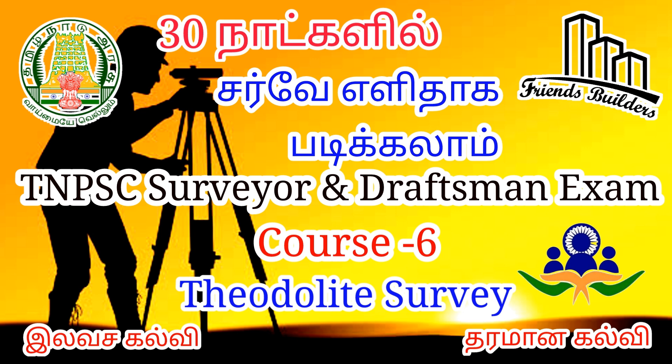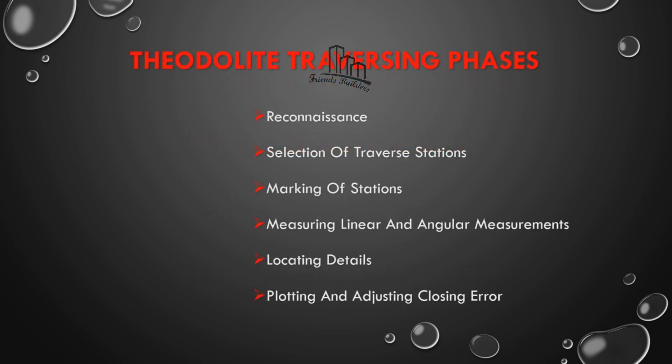Subscribe to our channel, click on the bell and we'll see the class regularly. There are many classes and links for you. Please check the link. The six procedures of traverse are: recognition sense, selection of traverse station, marking of stations, measuring linear and angular measurement, locating the details, and plotting and adjusting the closing error.